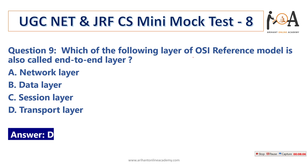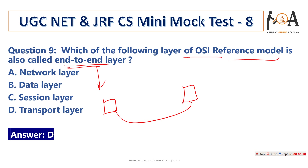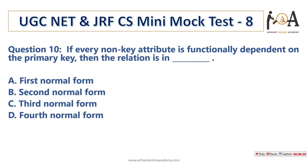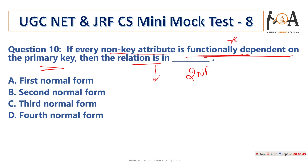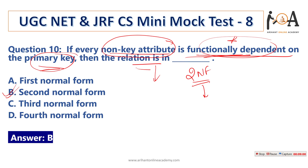Question number 8: which of the following devices takes data from one network device and forwards it to the destination based on MAC address? MAC address is the physical address, and a switch is the device that uses physical addresses to forward data from one networking device to another. So option C is the correct answer. Question number 9: which layer of the OSI reference model is also called the end-to-end layer? End-to-end means sending and receiving information directly from one end of the system to another, and the transport layer is responsible for this functionality. So option D is the correct answer.